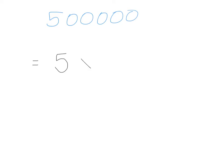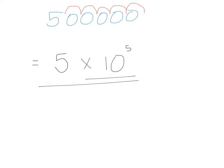So it's going to be 5 times 10 to the power of something. To find out what this power is, I need to count the spaces that the decimal point will have had to move to get to just after the first non-zero number. In 500,000 the decimal point would be at the end, and I count 1, 2, 3, 4, 5 spaces. So it's going to be 5 times 10 to the power of 5.